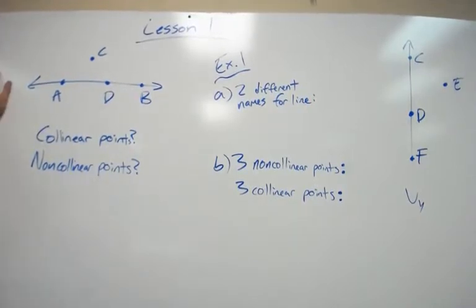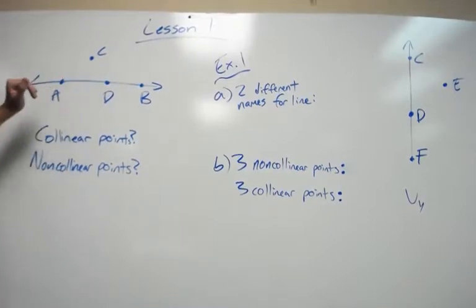So in this line right here, we have three points that we've labeled on it. There's infinite points on it, but there's three points that we have labeled on this line, A, D, and B.